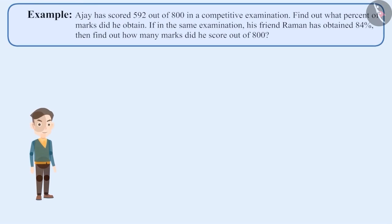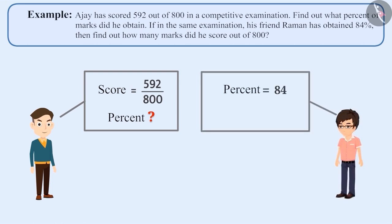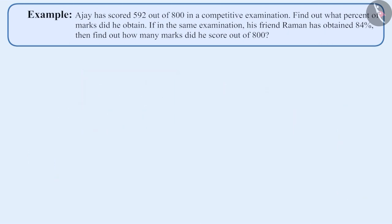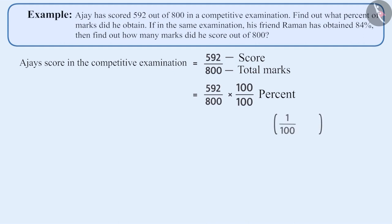Example 3: Ajay has scored 592 out of 800 in a competitive examination. Find out what percentage of marks did he obtain. Also, if his friend Raman obtained 84 percent in the same examination, find out how many marks did he score out of 800. Ajay has scored 592 by 800, where the total marks are 800. Let us express the score in percent: 592 by 800 equals 592 by 800 into 100 by 100, where we can express 1 by 100 as percentage.